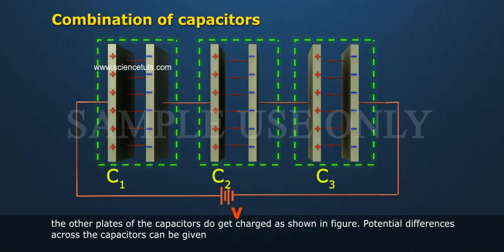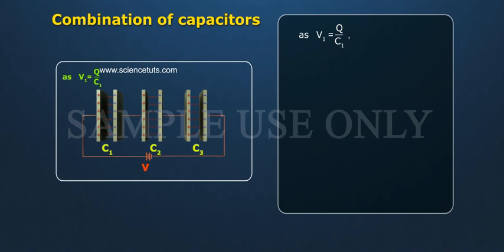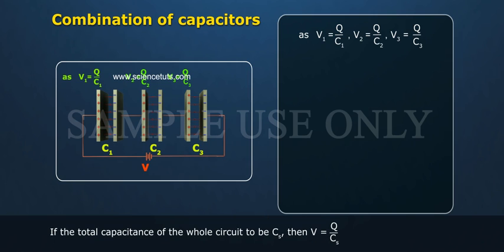Potential differences across the capacitors can be given as V1 equals Q by C1, V2 equals Q by C2, V3 equals Q by C3.